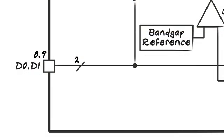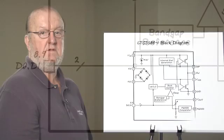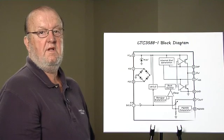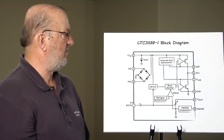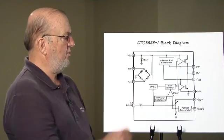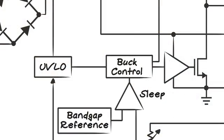We also have two digital bits that are used to set the output voltage to 1.8, 2.5, 3.3, or 3.6 volts. There's a low current under voltage detector which is used to control the buck regulator.